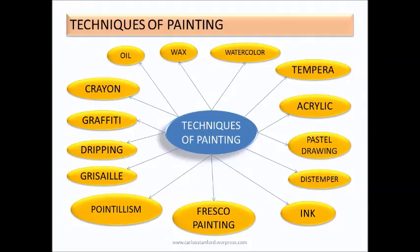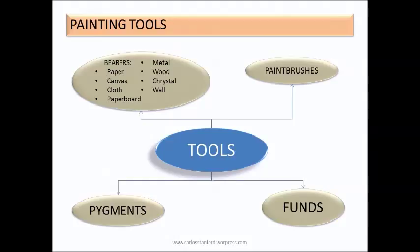Finally, as you can see, the materials used for painting include the following tools. Supports such as paper, canvas, cloth, paperboard, metal, wood, crystal, and the wall. Paint brushes, sponges, and pigments — including crayons, pastel, oil, watercolor, tempera, and wax, among others.